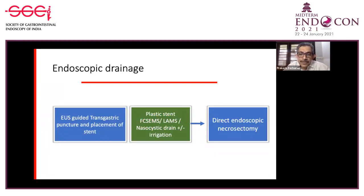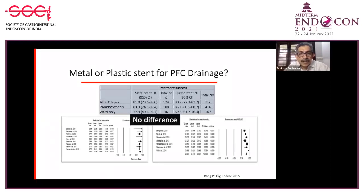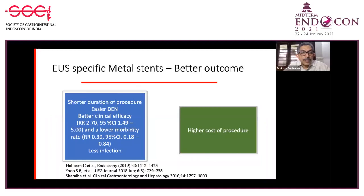Endoscopic drainage includes EUS-guided transgastric puncture and placement of a stent—which may be plastic, fully covered metal, or LAMS—along with a nasocystic drain for irrigation, followed by direct endoscopic necrosectomy. Regarding metal versus plastic stents for pancreatic fluid collection drainage: a study found no initial difference, but EUS-specific metal stents were later found to reduce procedure duration, make direct endoscopic necrosectomy easier, and provide better clinical efficacy and lower morbidity, at higher cost.